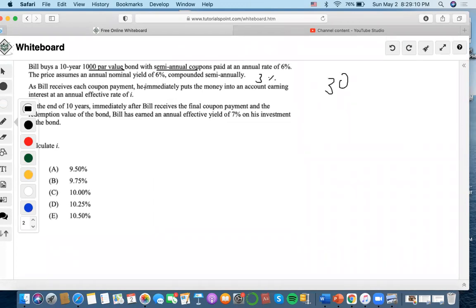As Bill receives each coupon, he immediately puts the money into another account earning interest at an annual effective rate of i. So again, this is a reinvestment concept situation.